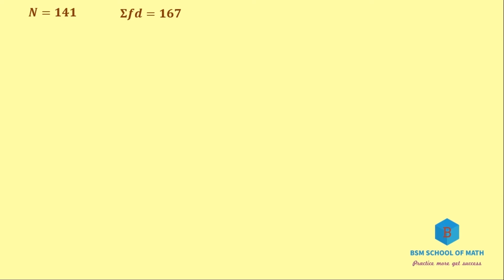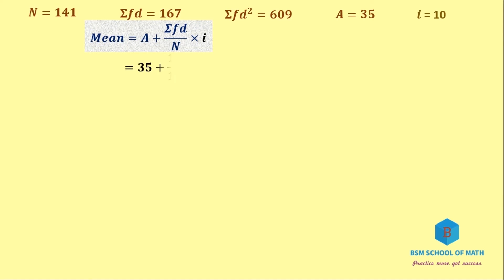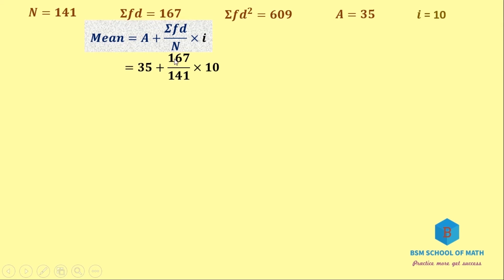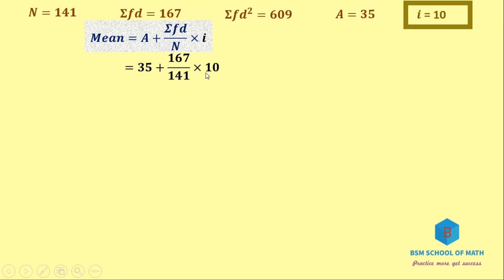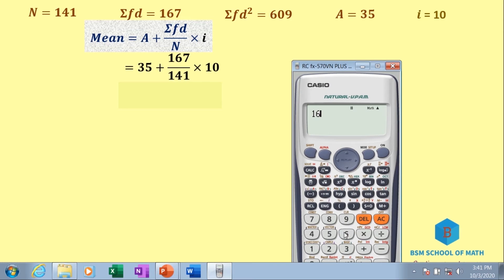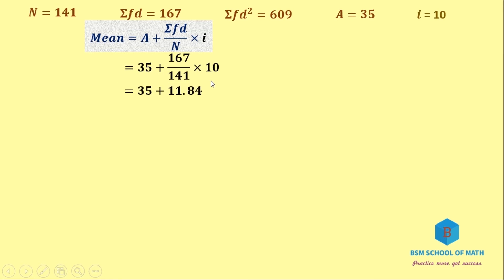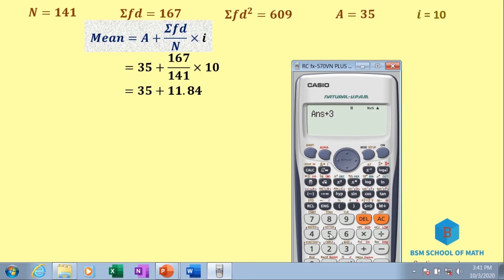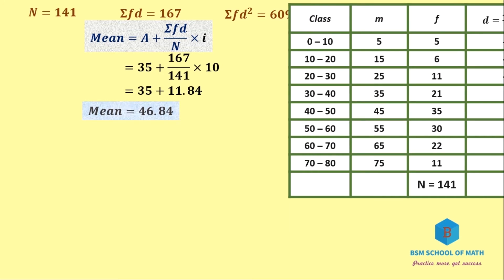Substituting into the mean formula: Mean = A + (ΣFD ÷ N) × I = 35 + (167 ÷ 141) × 10 = 35 + 11.84 = 46.84.